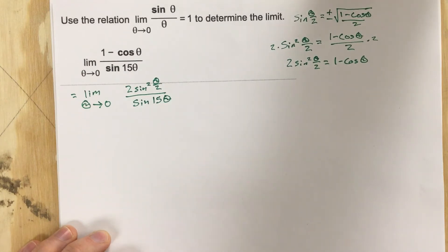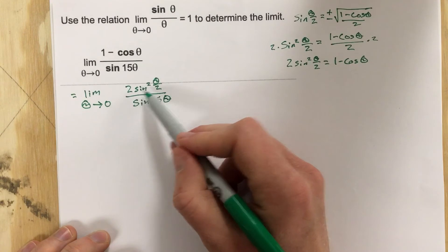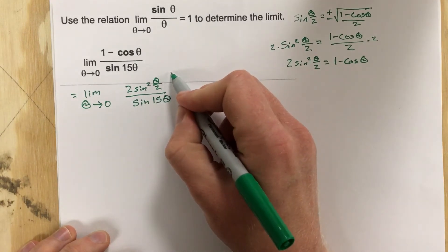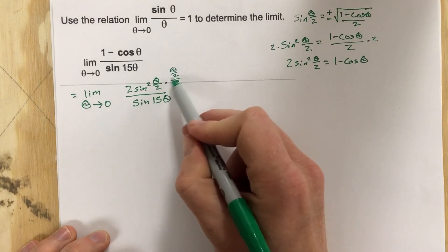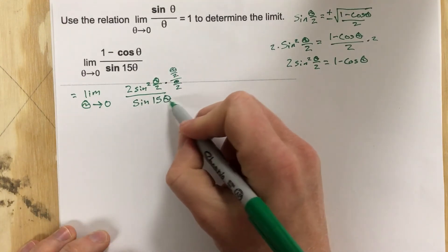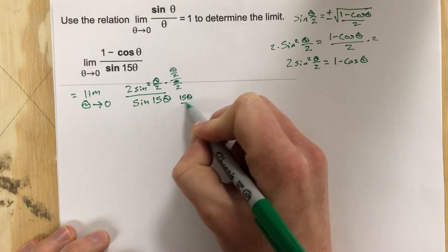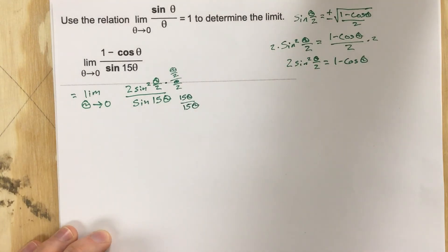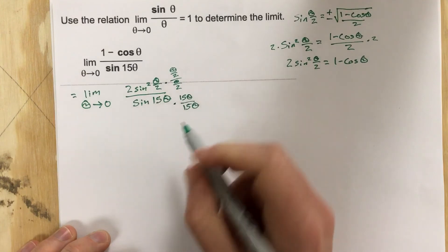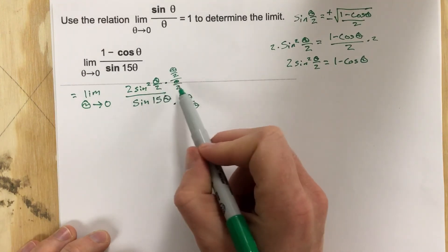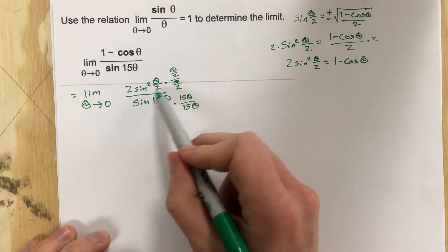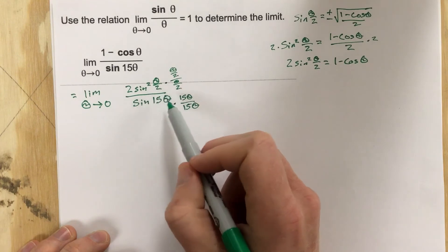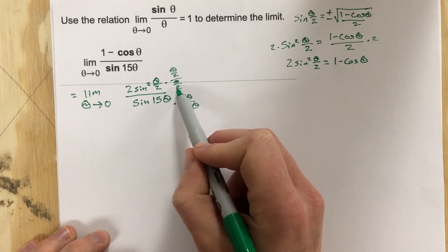Now we're going to do some serious manipulating. We're going to multiply the top by theta over 2 over theta over 2 — which is just 1. On the bottom we're going to multiply by 15 theta over 15 theta. The reason for this is that we'll split sine squared theta over 2 into two sine theta over 2 factors and place the theta over 2 denominator underneath one of them.